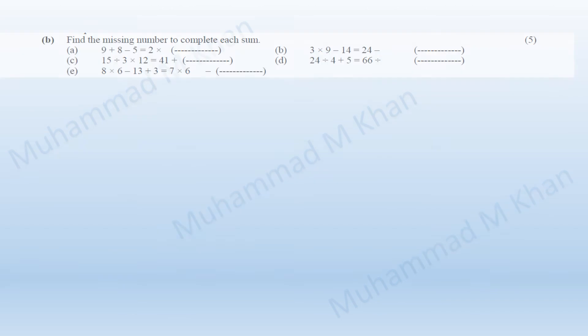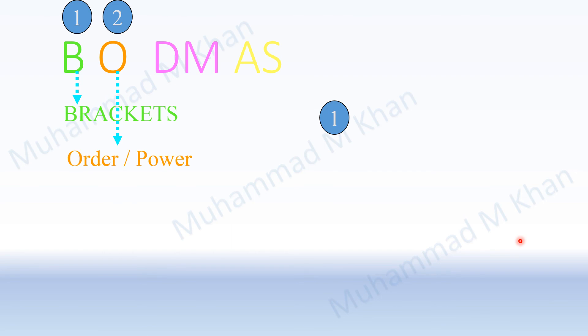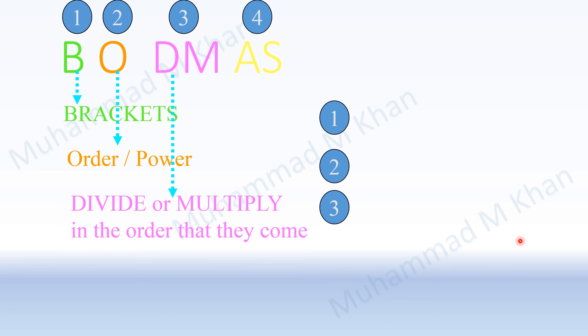Before moving to Part B, let me introduce the order of mathematical operations, remembered by the word BODMAS. B stands for Brackets — solve what is inside brackets first. Then O for Orders — powers such as squares, cubes, or square roots. Then comes Division and Multiplication, and finally Addition and Subtraction at the end.